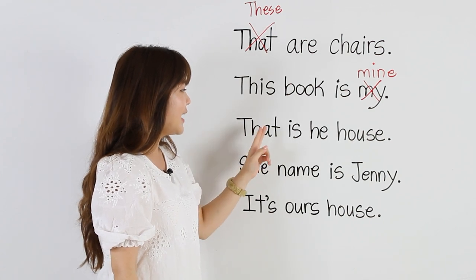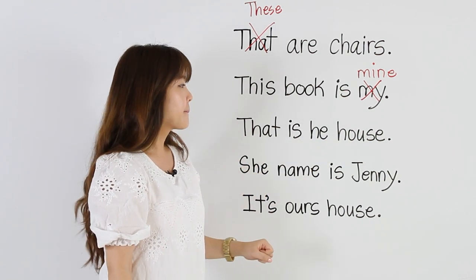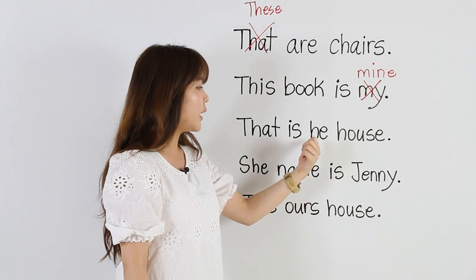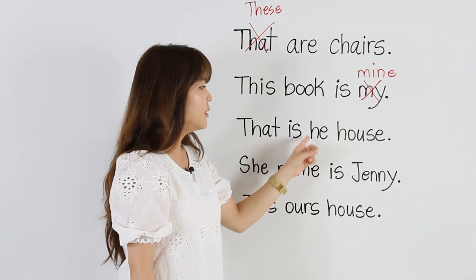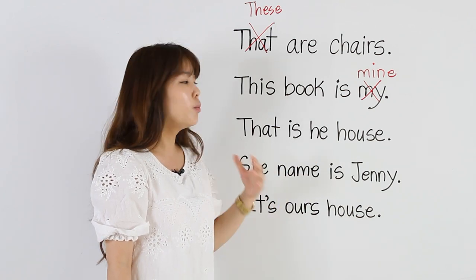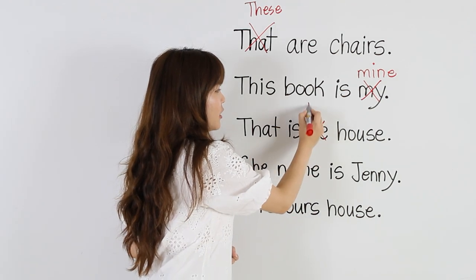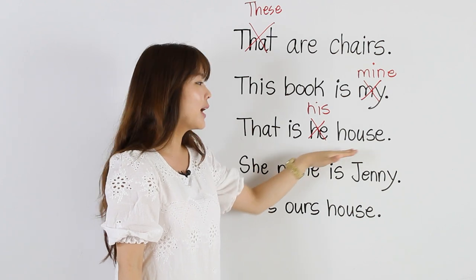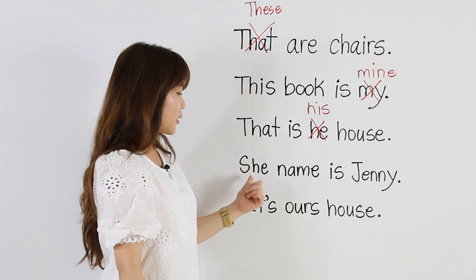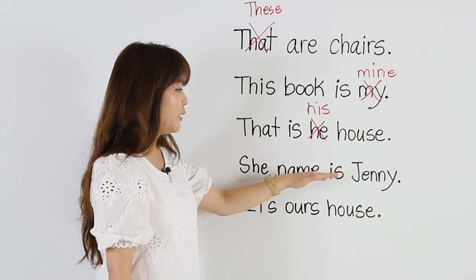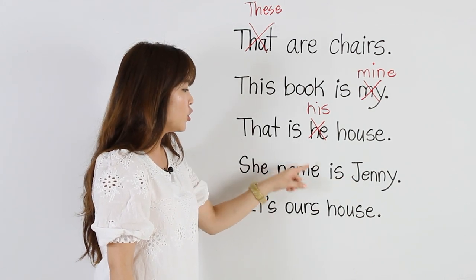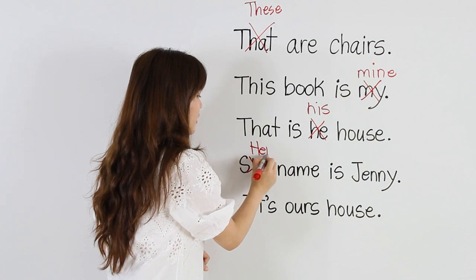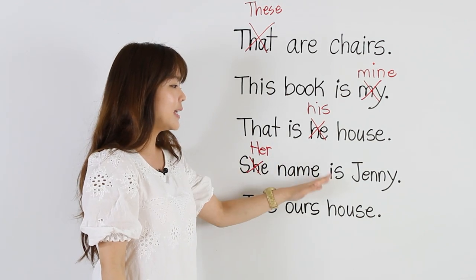'That is he house.' We want to show that this house belongs to this man or boy, but the word 'he' does not show possession. So we say: 'This is his house' — 'his' and then the noun 'house'. Similarly, for the next one: 'She name is Jenny.' We want to show the name belongs to Jenny, so we say: 'Her name is Jenny.'